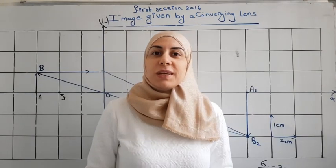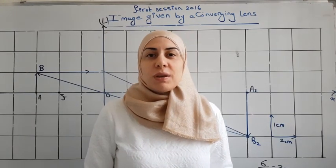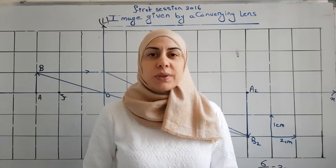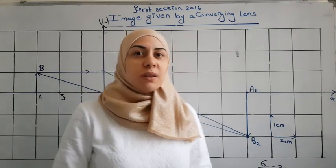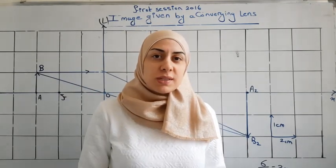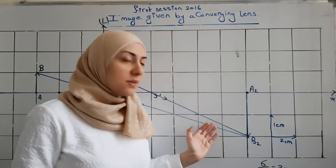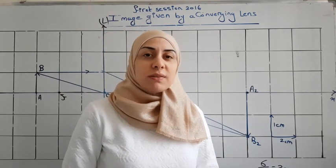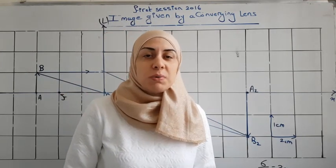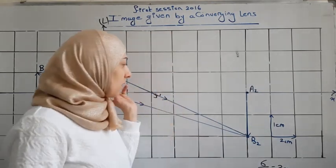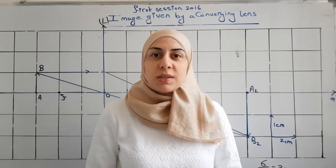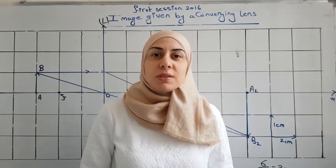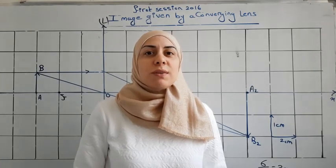We have to indicate the nature of image A2B2, whether it is virtual or real. A2B2 is a real image. It is inverted, formed after the lens, and B2 is the actual intersection of the two emergent rays coming from B. Since justification is not required here, we simply state that A2B2 is a real image.